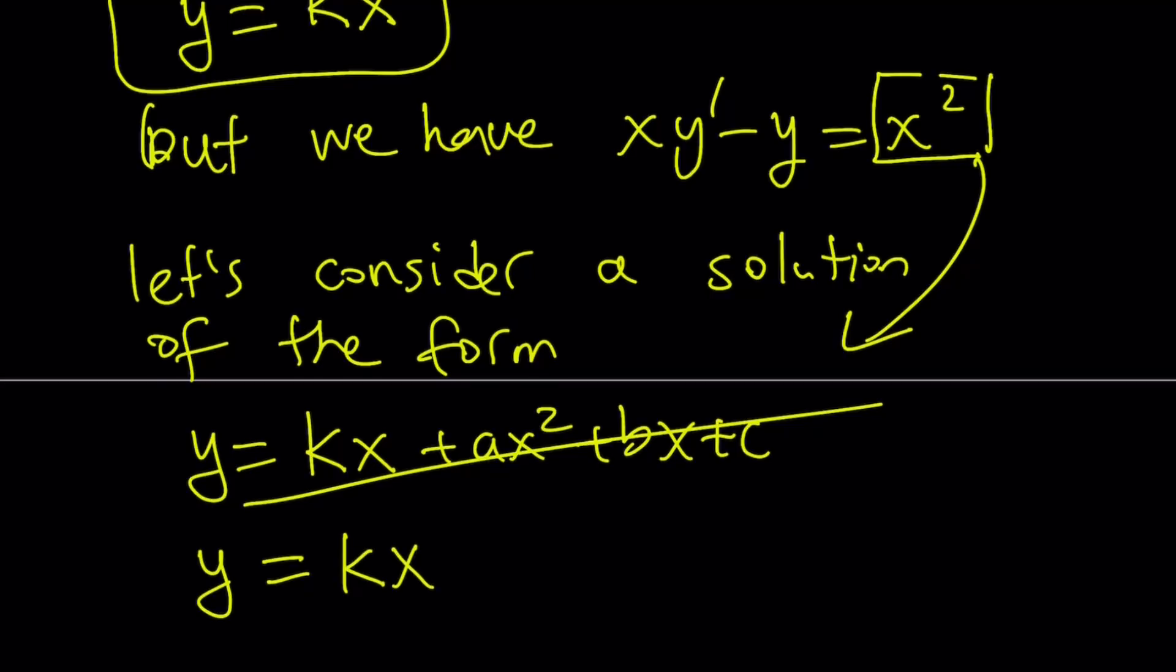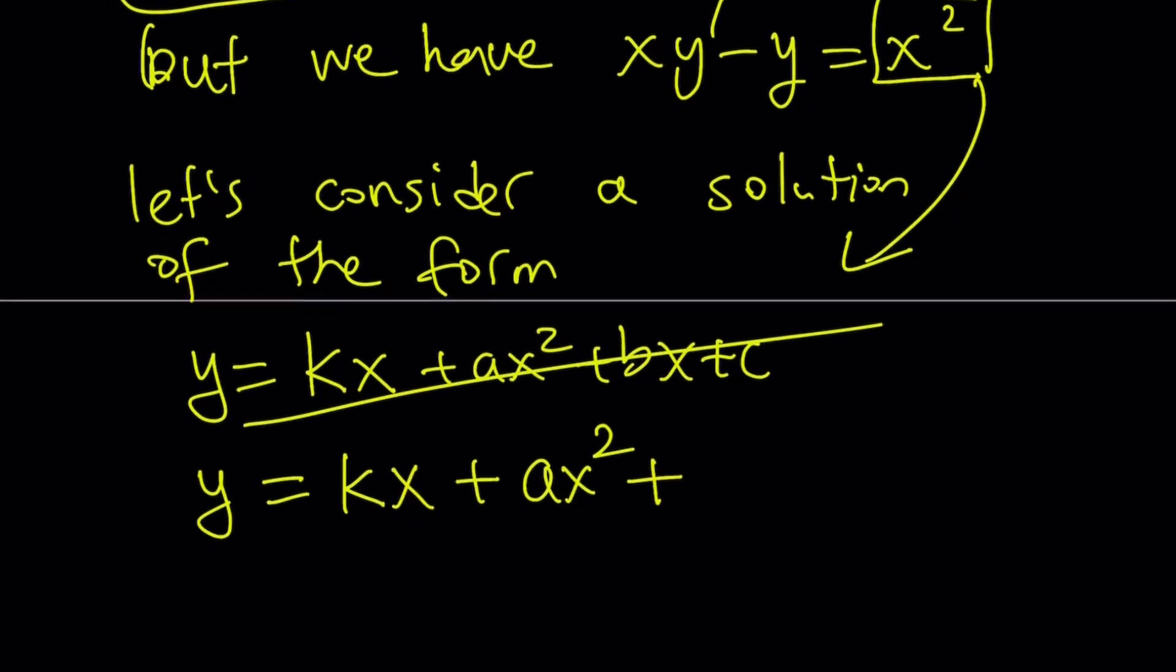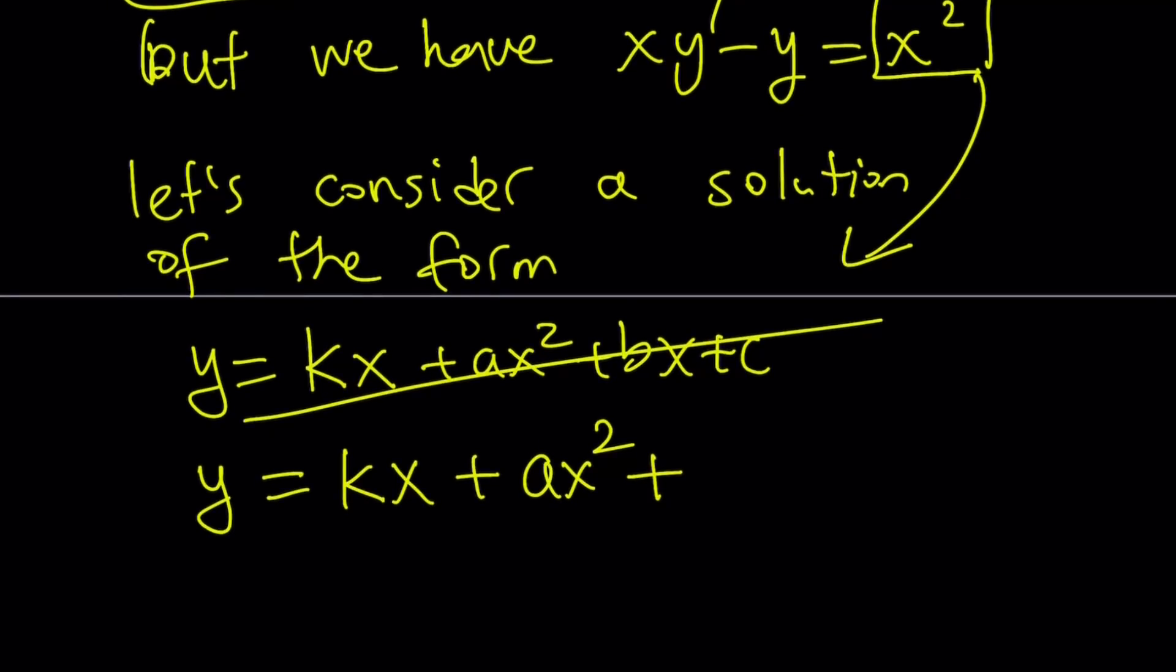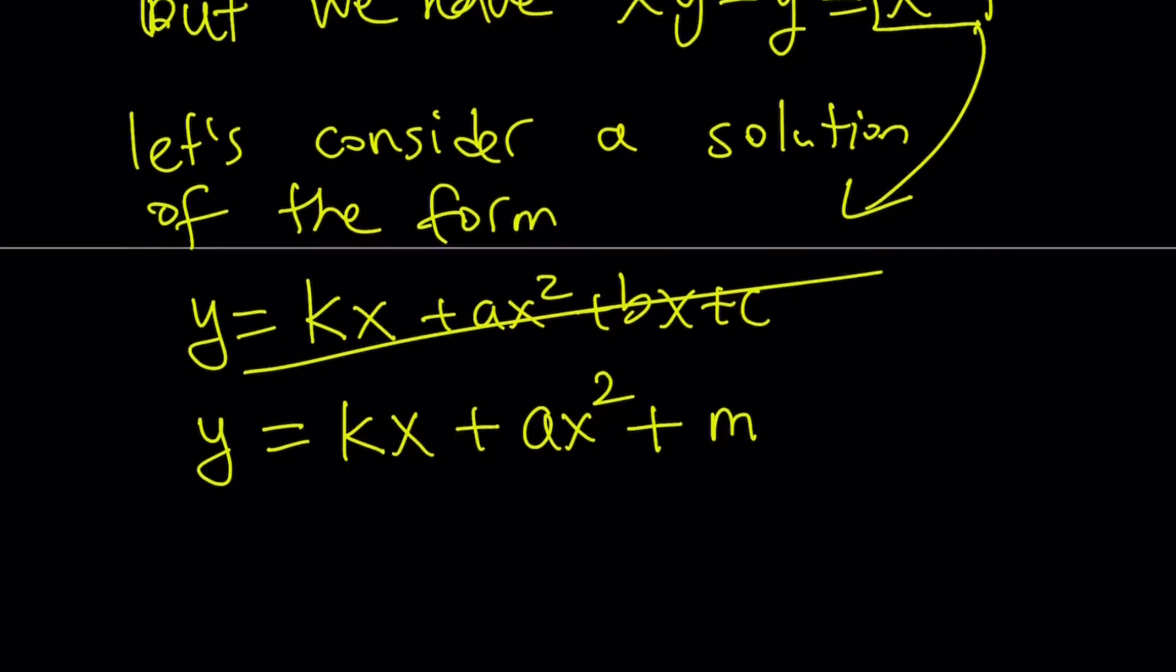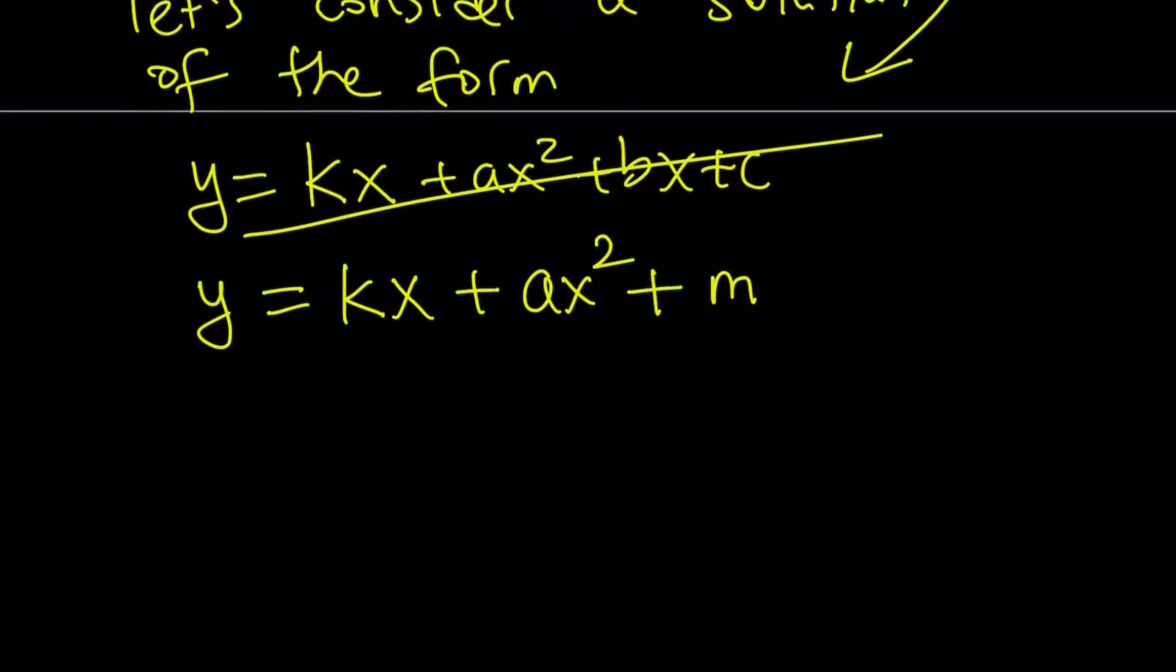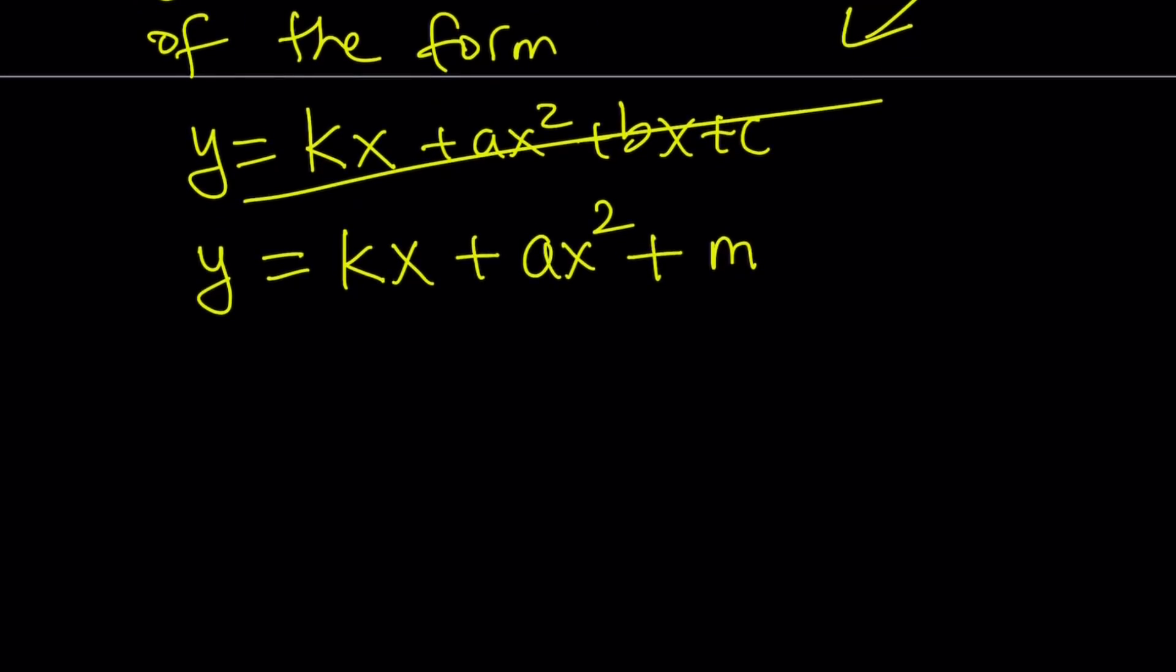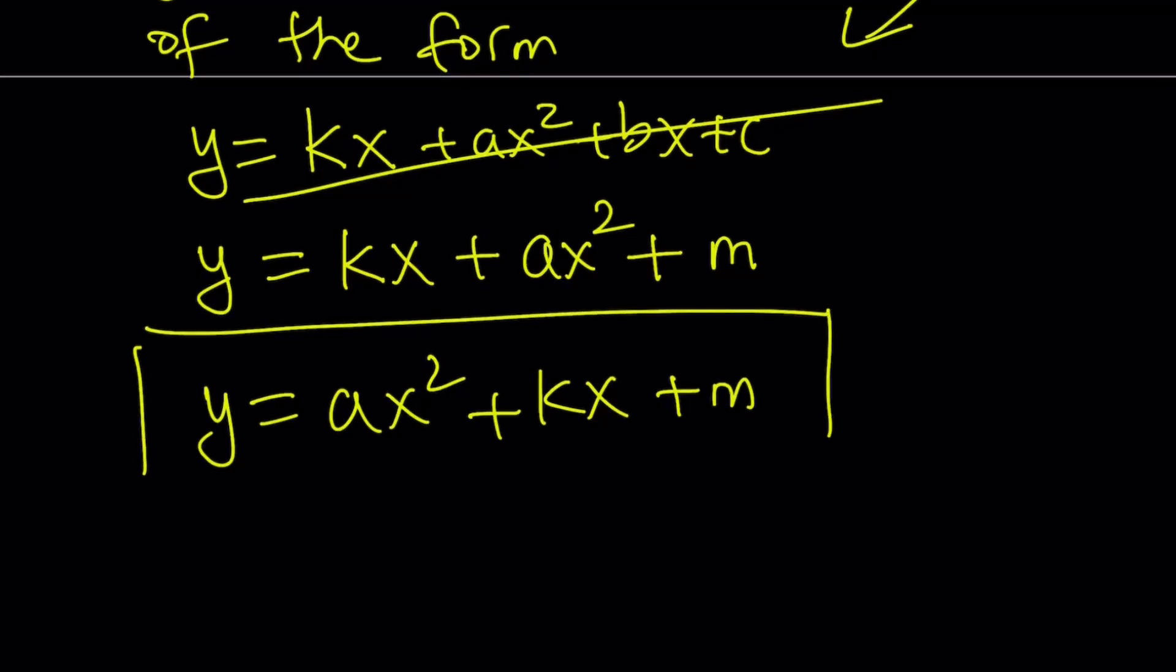Y equals kx plus ax squared plus c. If you don't want to use a c, you could probably use, let's just use m. Okay. Great. So now, this is going to be, and obviously, we can write it in a nicer way like ax squared plus kx plus m. Just in standard form, you know. So now, we're going to go ahead and substitute this.